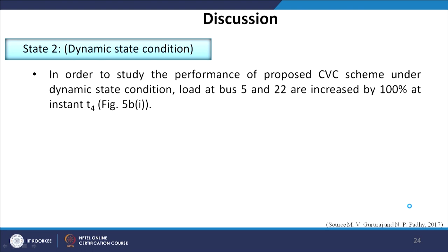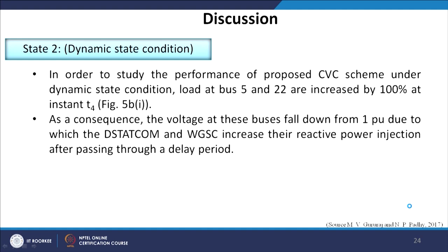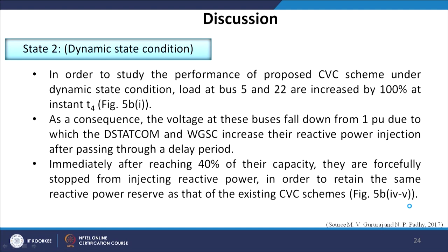For state 2 (dynamic state), to study the proposed CVC scheme performance, the load at bus numbers 5 and 22 is increased by 100 percent at instant T4. As a consequence, the voltage at these buses falls from 1 per unit, causing the DSTATCOM and WGSC to increase reactive power injection after passing through a delay period. Immediately after reaching 40 percent of their capacity, they are forcefully stopped from injecting further reactive power in order to retain the same reactive power reserve — consistent with the existing CVC scheme.